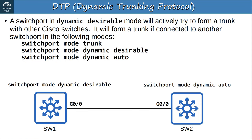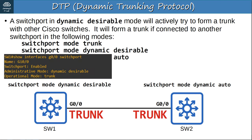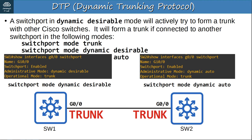If SW2's interface is configured in dynamic auto mode, it does not actively try to form a trunk — it's more passive. It will tell SW1: if you want to form a trunk, I'll form a trunk, but I'm not going to actively try. However, because SW1 is in dynamic desirable mode, a trunk will still be formed. SW2's show output displays administrative mode of dynamic auto and operational mode of trunk.